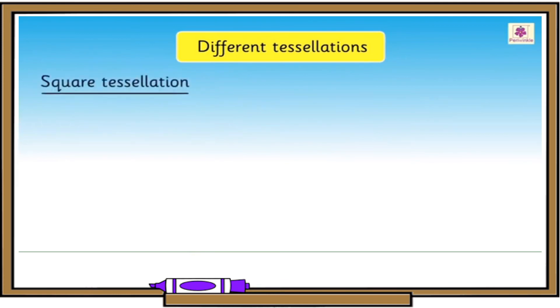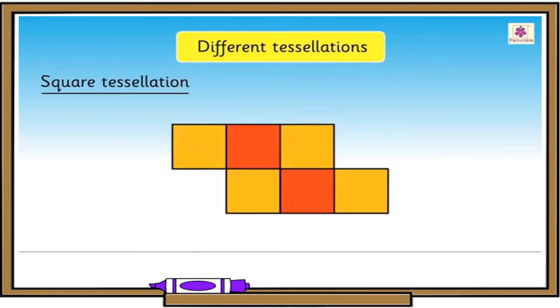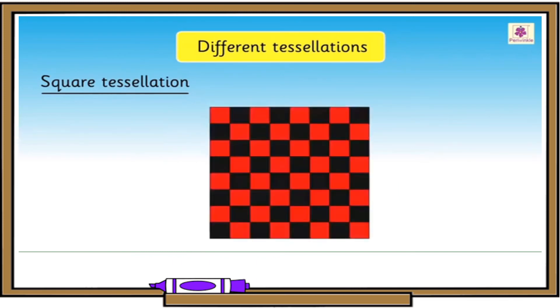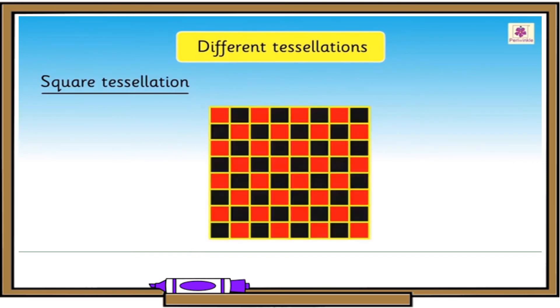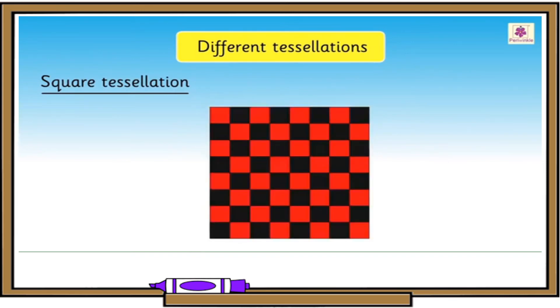Square tessellation is where squares are arranged in a pattern. The squares meet edge to edge with no gaps and no overlapping areas. Look at this checkerboard. It is made up of squares. Here, each square meets another one at the vertex.